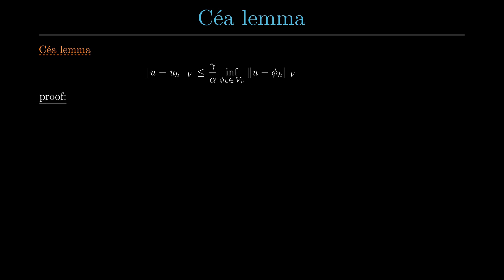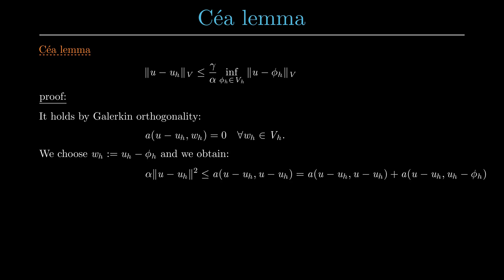For the proof, we will need the Galerkin orthogonality. We start with the coercivity of the bilinear form and add another term which is zero by the Galerkin orthogonality. We combine these two terms since the bilinear form is linear in the second argument.